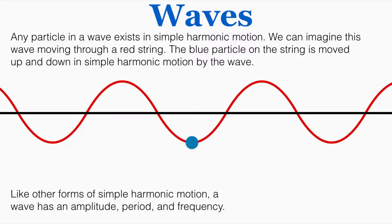We know that any particle in a wave exists in simple harmonic motion. We can imagine this wave moving through a red string as an example. The blue particle on the string is moved up and down in simple harmonic motion by the wave as the wave moves through it.